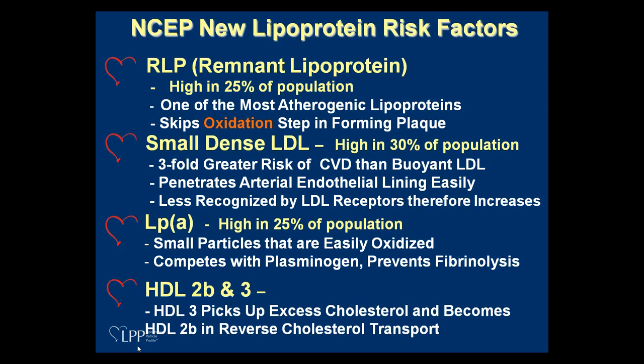The last of the four new risk factors is the subsplit of HDL. HDL3 is how your liver makes HDL — it picks up cholesterol and becomes larger and larger, becoming HDL2b. The 2b is the end result of reverse cholesterol transport. We want an adequate amount of 2b showing that the HDL is functional. About 25% of our population has low HDL2b.